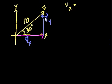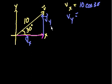And hopefully by now it's second nature how we figure these things out. v sub x would be 10 times cosine of this angle, 10 cosine of 30 degrees, which I think is square root of 3 over 2. And v sub y would be 10 times sine of that angle. This should be second nature to you.